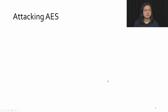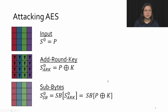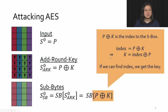Let's look at attacking AES. We have our input, the plaintext, and then we XOR it with the key. This is used to index the lookup table or substitution box — from now on I'll refer to it as SBox, represented as SB, indexed with plaintext XOR key. The key point is that because the index equals plaintext XOR key, we can say that the key equals the index XOR the plaintext. If we know the plaintext and can somehow get the index, we can get the key.